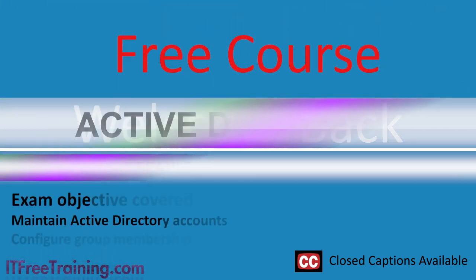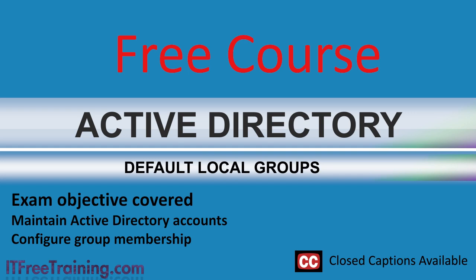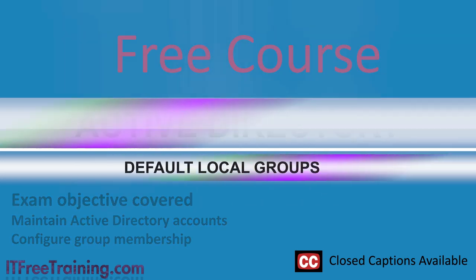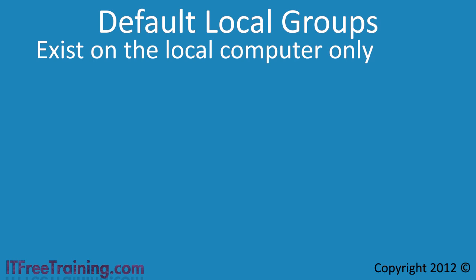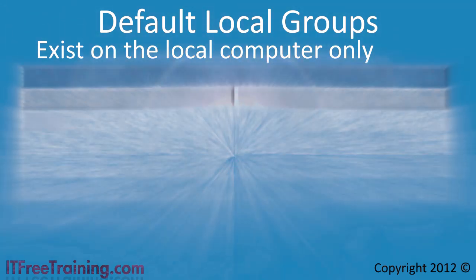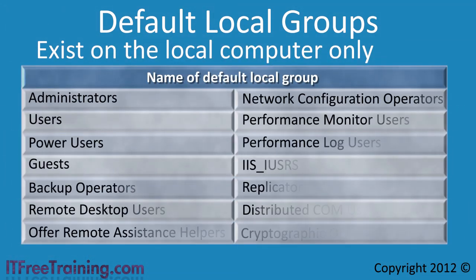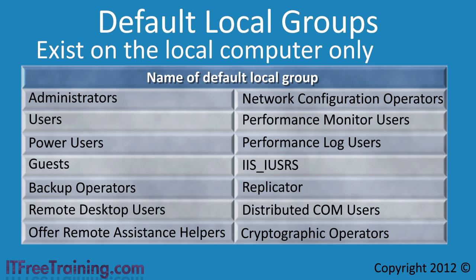Welcome to the next free video for the free Active Directory course. In this video I will look at default local groups. Default local groups are groups that are created on the local computer in order to make administration easier. If you want to give a user access to perform certain tasks, you simply need to add the user to that group. These 14 default local groups exist in Windows Server 2008 and Windows 7 and are only available on that local computer.